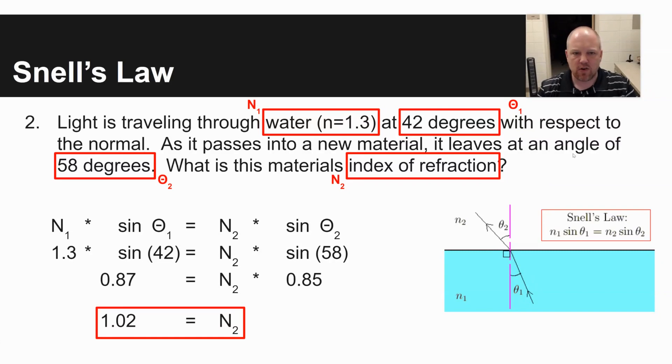I would take these different values that are labeled here, n1 times sine theta1, or 1.3 times sine 42, making sure that your calculator's in degrees, is equal to n2 times sine 58. 58 degrees being that angle of refraction. What I ended up with in my calculator when I typed in 1.3 times sine 42 is equal to 0.87. And then I came up with a value of 0.85 when I typed in sine 58 in my calculator.